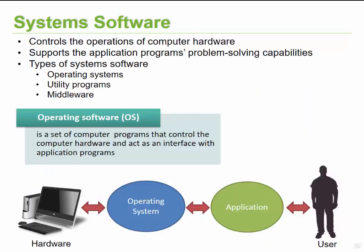System software controls the operations of your computer hardware and supports application programs to allow you to perform certain tasks. There are different types: operating systems, utility programs, and middleware, which we will talk about in the next section.